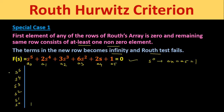To construct the s⁵ row, we take even-indexed coefficients: a₀ = 1, a₂ = 3, a₄ = 2. To construct the second row (s⁴), we take all odd-indexed coefficients: a₁ = 2, a₃ = 6, a₅ = 1.